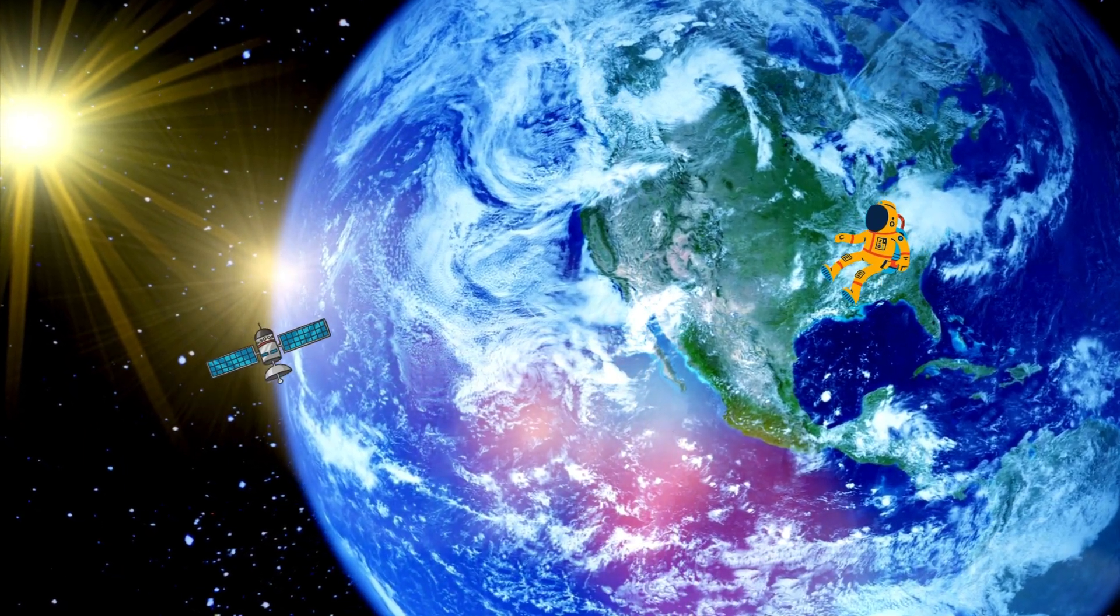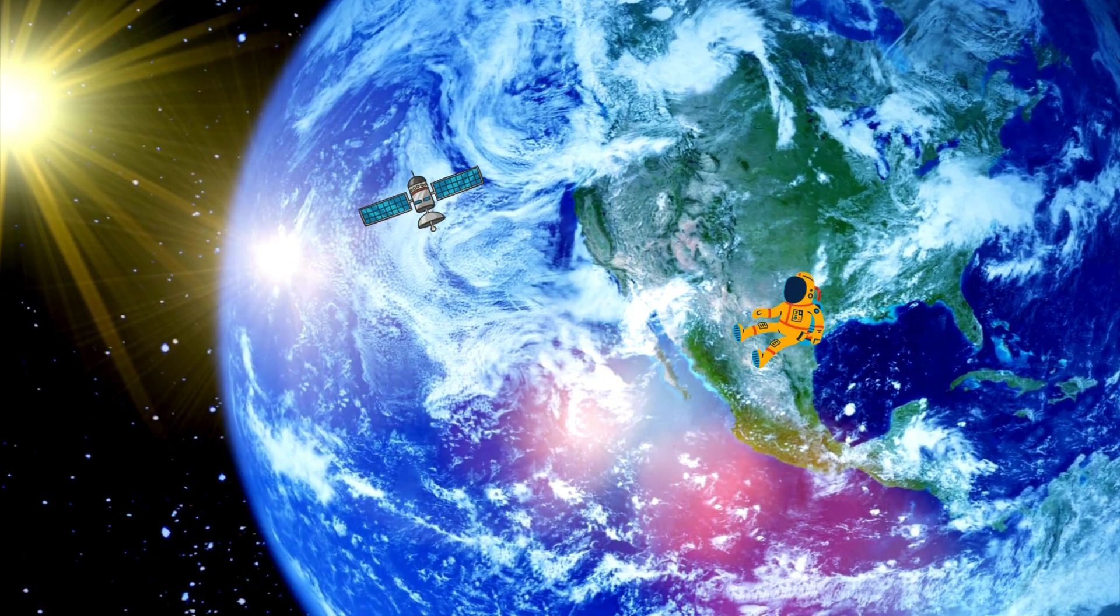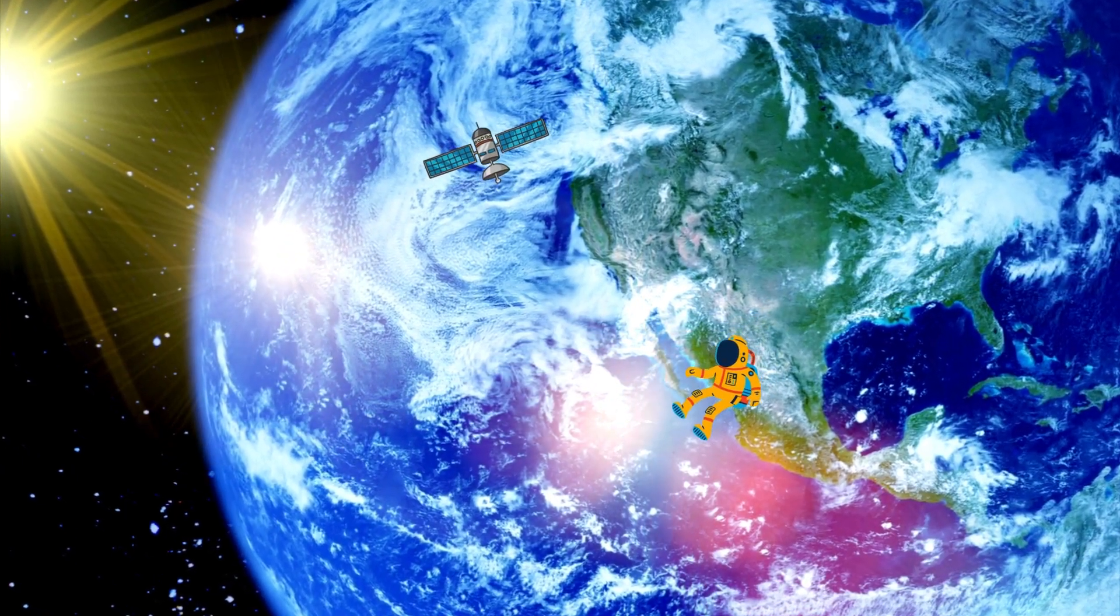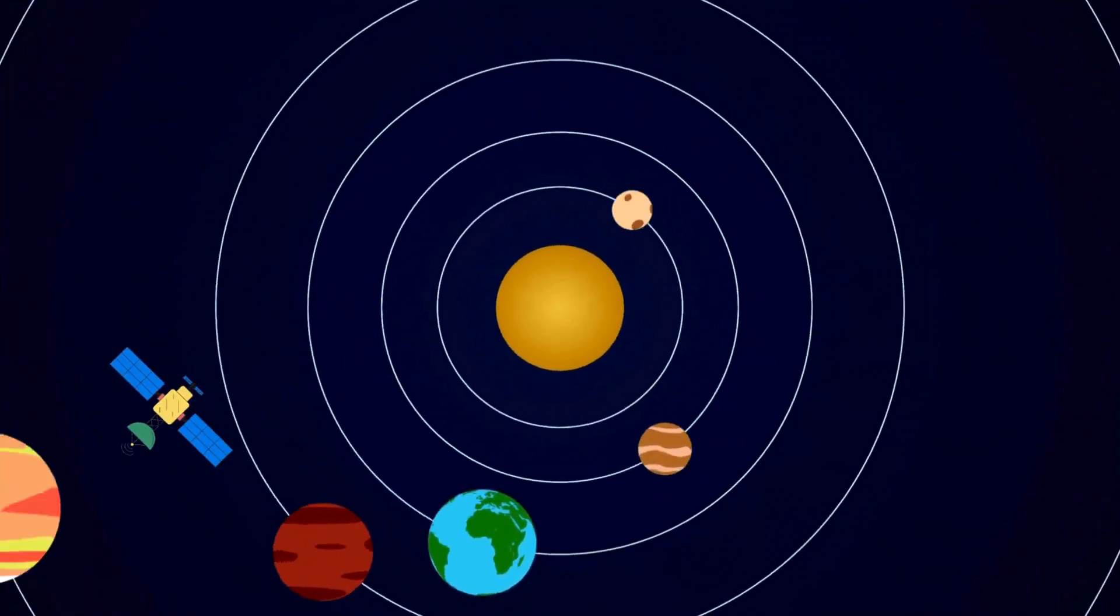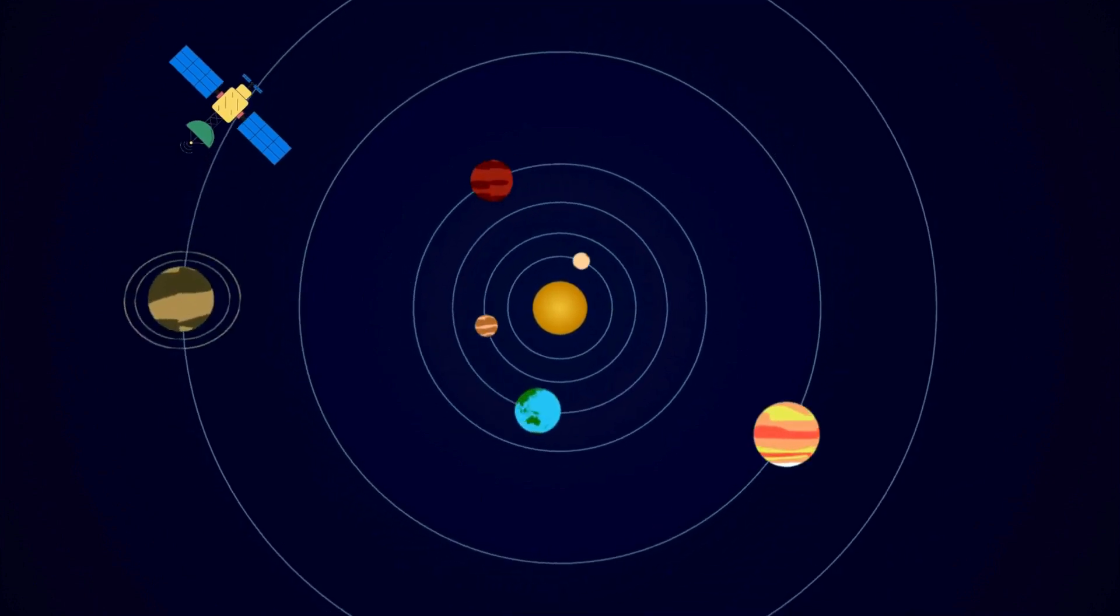Uranus rolls on its side. Neptune's blue, way far and wide. Eight cool planets in the sky. Stars and moons are floating by. Come back soon, there's more to see. Space is fun for you and me.